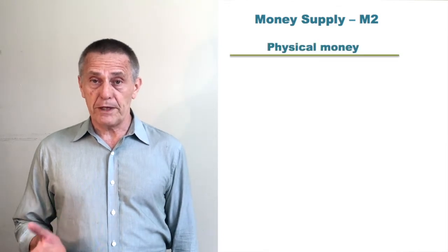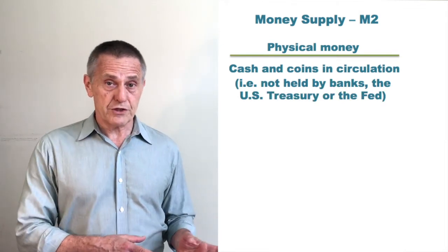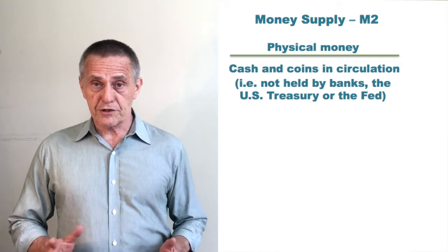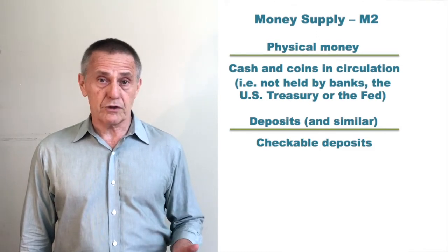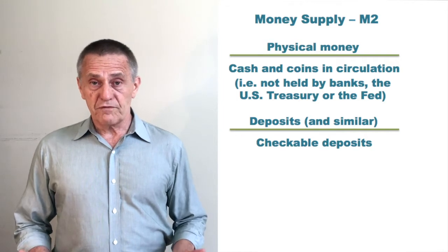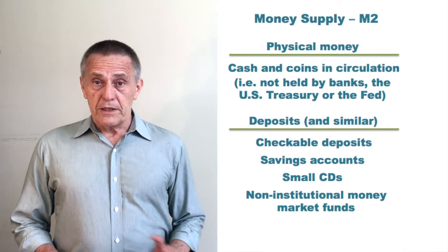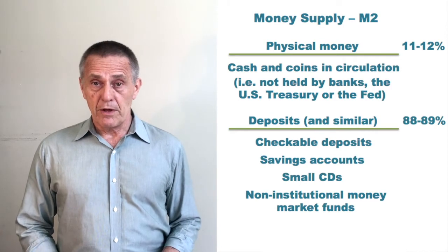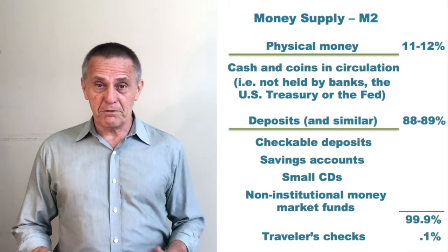Let's look at a relatively broad measure of money: M2. M2 is not comprised of physical money in circulation — that's cash and coins in the hands of the public. Cash and coins in the hands of commercial banks, central banks, or the treasury are not part of the money supply. So M2 is made up of physical money in circulation, cash and coins in circulation, and a wide range of deposits: most checkable deposits like checking accounts or NOW accounts, negotiable orders of withdrawal, various sorts of time deposits, savings accounts, small CDs, and non-institutional money market funds. Physical money in circulation typically makes up 11–12% of the money supply. Deposits make up another 88–89%, and together those two typically comprise about 99.9% of M2. The remaining 0.1% is made up of traveler's checks and the like.